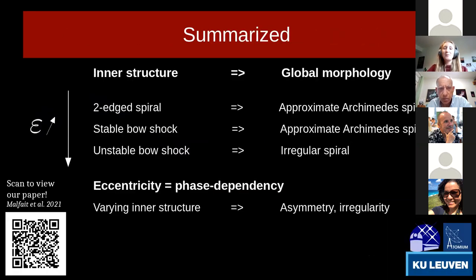To conclude, we found that different inner structures and global morphologies are formed in the wind depending on the strength of the wind companion interaction. In the case of eccentric systems, the phase dependency of the varying orbital separation results in a variation of these inner structures such that asymmetric and irregular global morphologies are formed. If you are interested in the details of this work, please take a look at our paper. Thank you for listening. Do you have any questions?